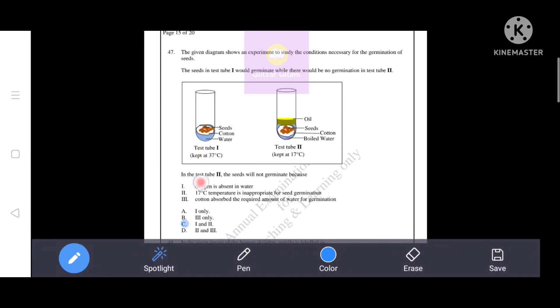In test tube 2, the seeds will not germinate because oxygen is absent in water - correct. 17 degree centigrade temperature is inappropriate for seed germination - correct. Cotton absorbs the required amount of water for germination - incorrect, because cotton is present in both. That's why option C is the correct answer, which shows both correct statements, that is 1 and 2. That's why in test tube 2 seeds will not germinate.